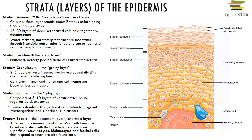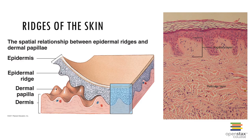The stratum corneum, the horny layer or outermost layer, is a layer of flat dead cells several rows thick. It is keratin-filled, thicker in parts of the body where friction occurs. The cells flake off through wear and tear and it functions to protect from abrasion and penetration, waterproofs the skin, and acts as a barrier against biological, chemical, and physical hazards. Remember, the epidermis is avascular but has an extensive nerve supply.